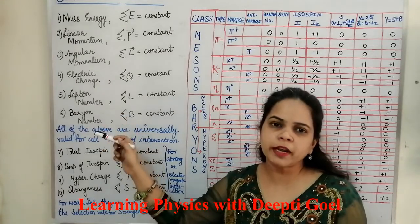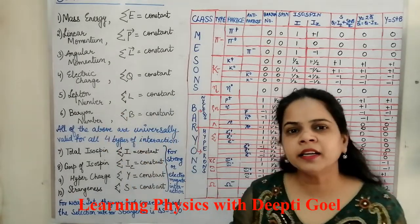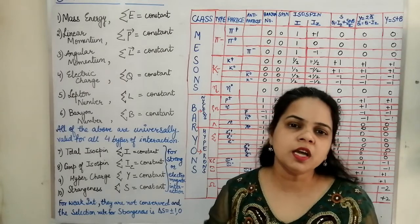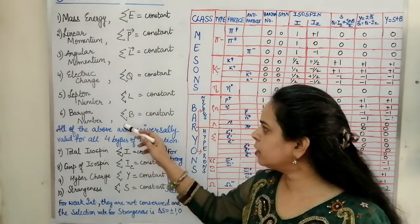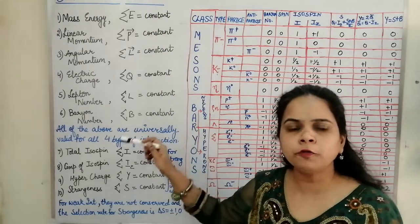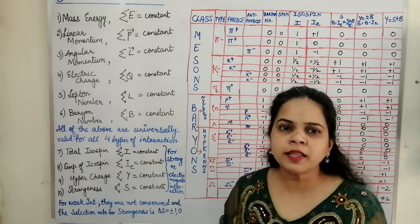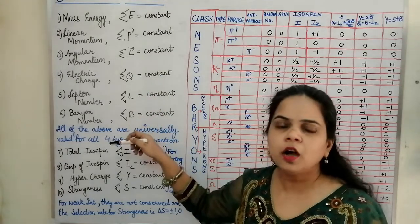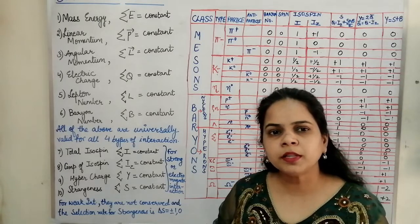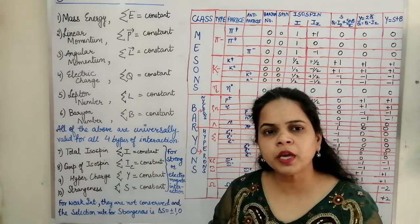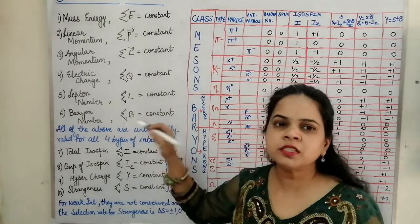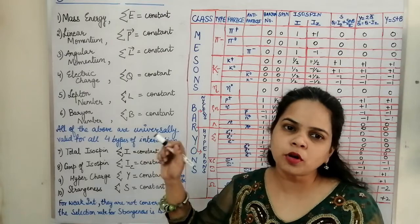Similarly, for baryon number conservation, baryons on the reactant side must be balanced by baryons on the product side, and the sum of baryon numbers on both sides must be equal — the summation of baryon number is constant. All six of these laws — mass-energy, linear momentum, angular momentum, electric charge, lepton number, and baryon number — are conserved for all four types of fundamental interactions. Any process violating these cannot take place.